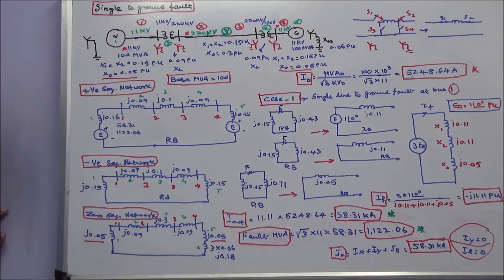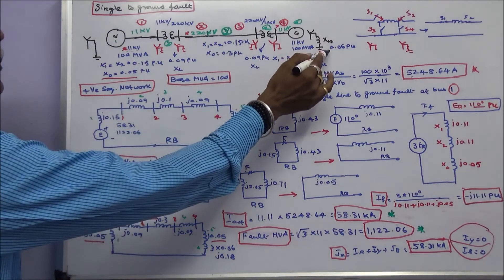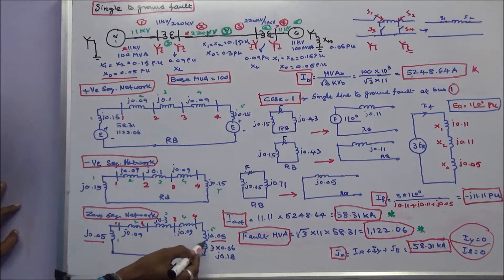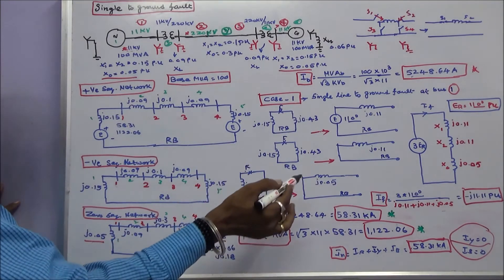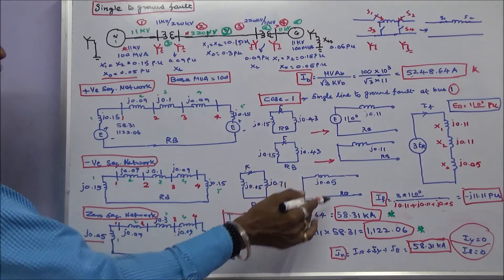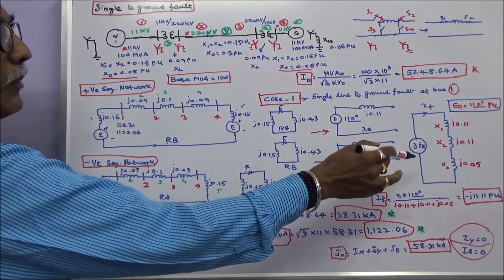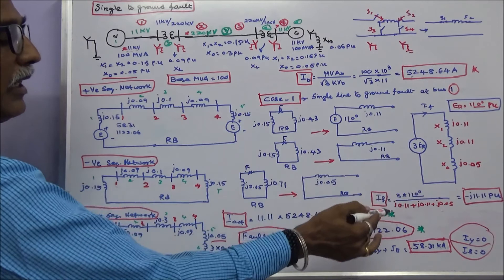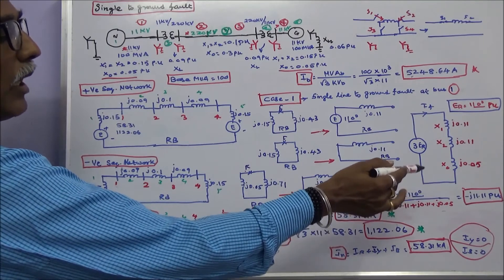For the zero sequence network, with fault at bus 1, the value is j0.05. All reactance values include 0.06 into 3, giving j0.18. Therefore, j0.08 plus j0.3 plus j0.08 plus j0.05 plus j0.18 equals j0.71. These two are connected in parallel, giving equivalent zero sequence Thevenin reactance of j0.05. Positive sequence reactance X1 is j0.11, negative sequence X2 is j0.11, zero sequence X0 is j0.05. Fault current IF equals 3 times prefault voltage 1.0 divided by j0.11 plus j0.11 plus j0.05, which equals minus j11.11 per unit.